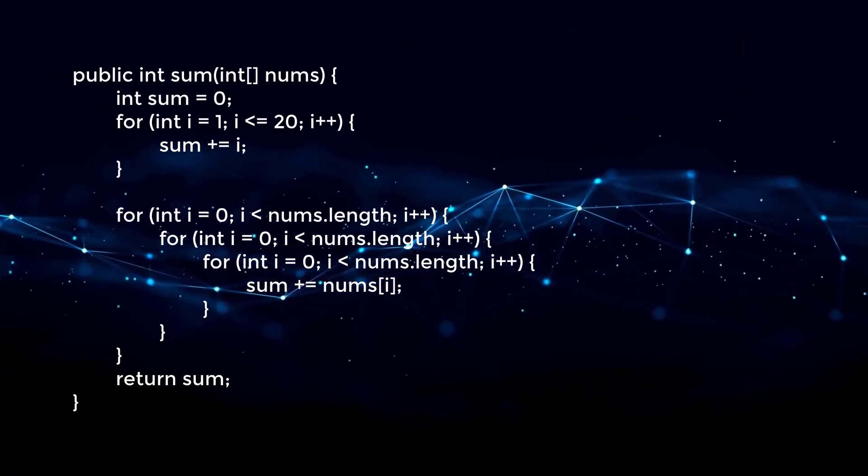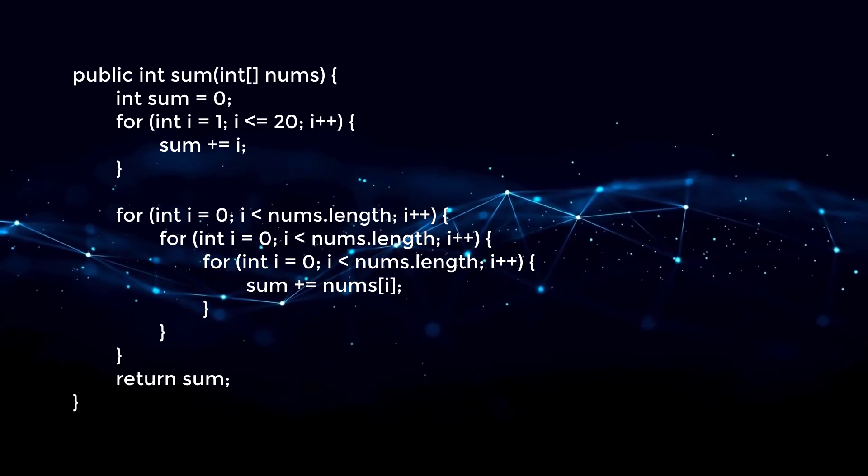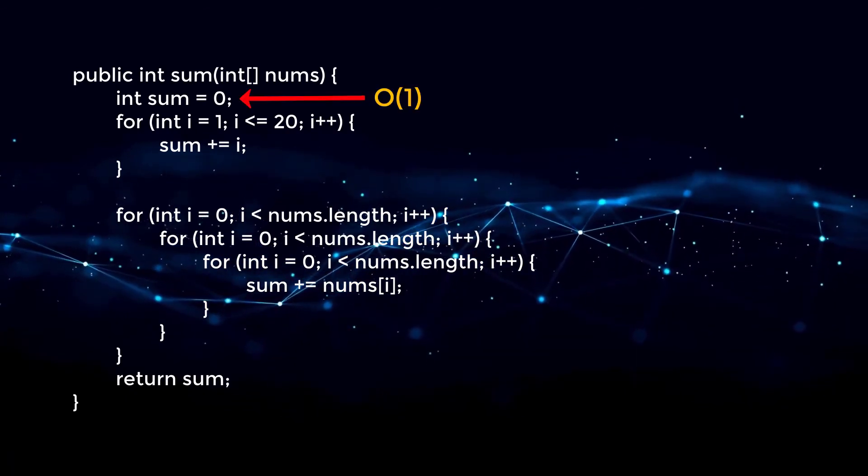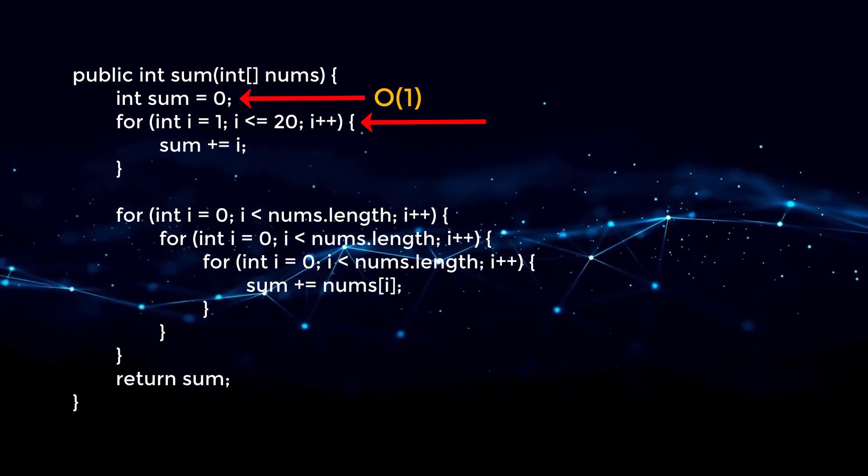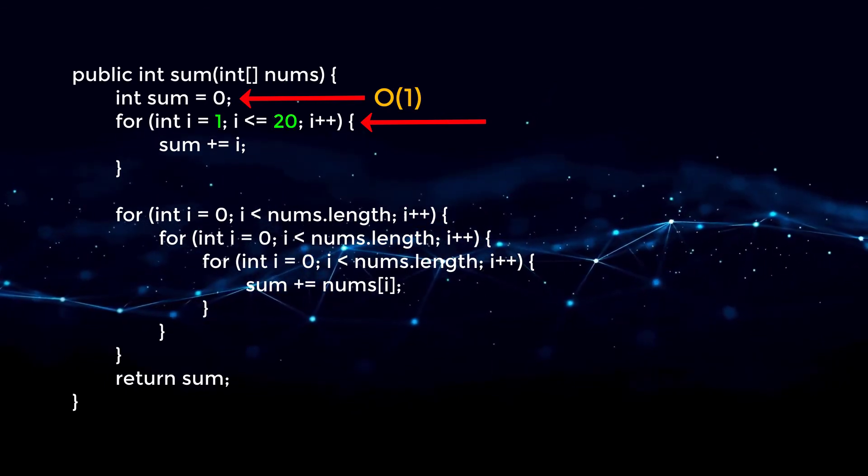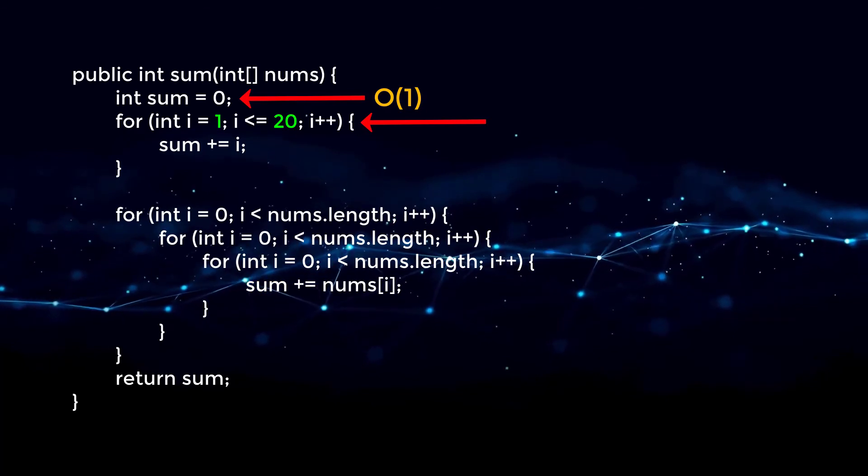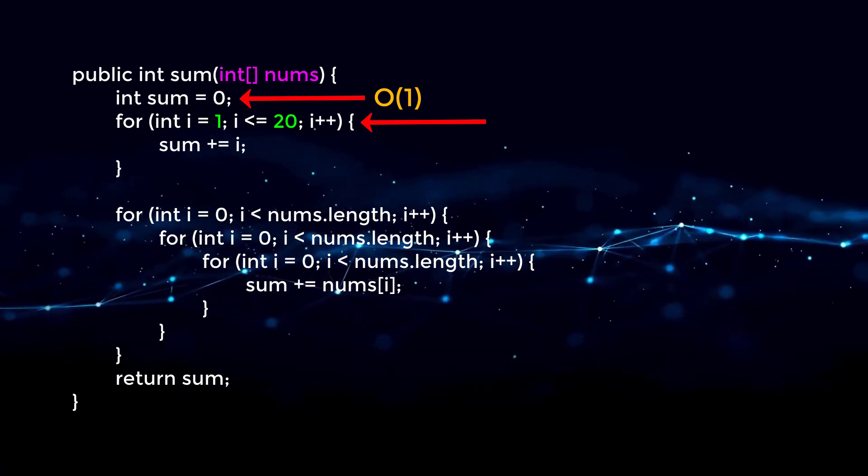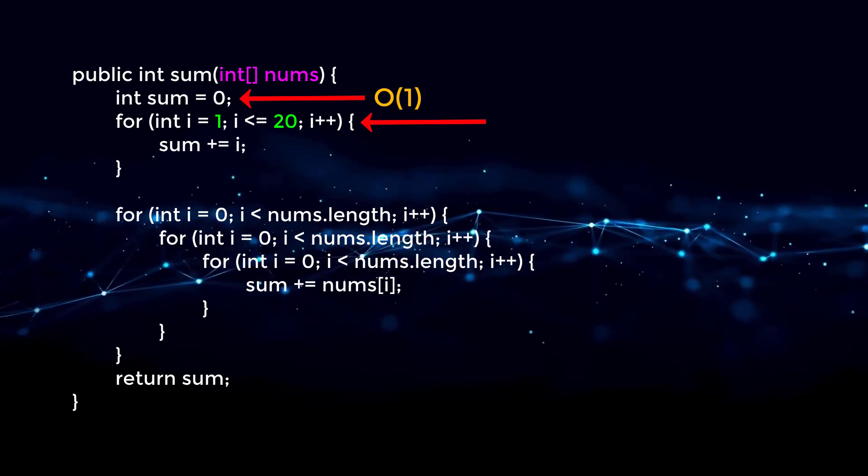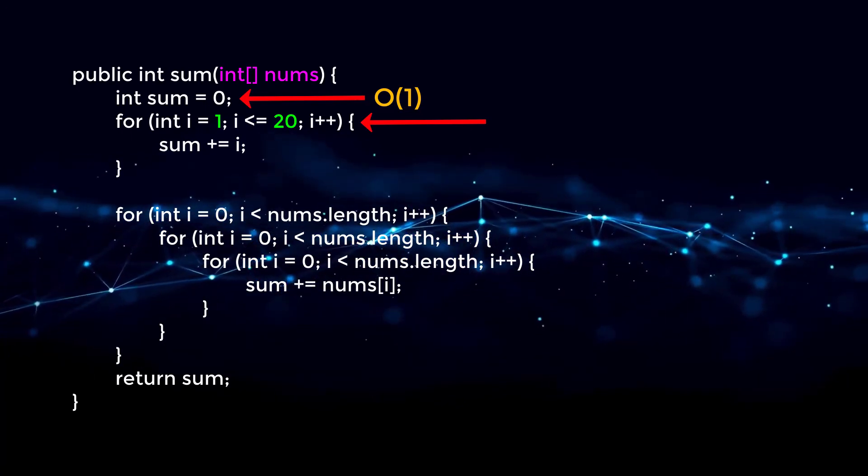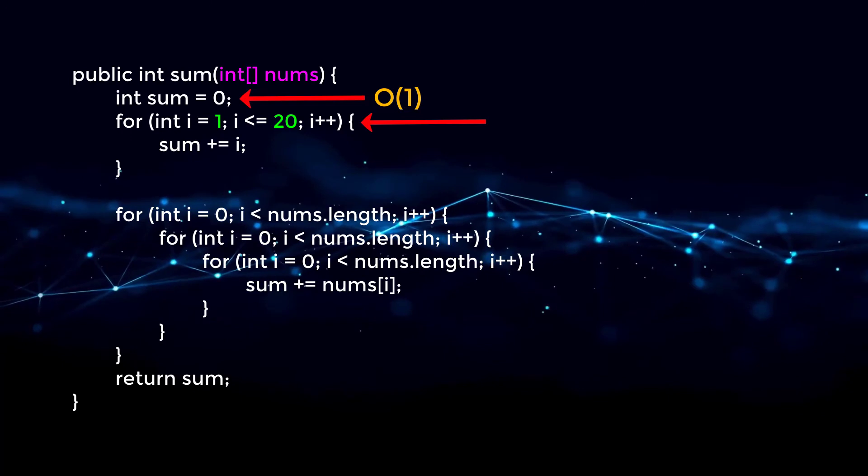So let's look at one more example, but this time it's going to be a bit more involved. We already know line one is running in constant time. Line two, however, it is always running from one to 20. What this means is that no matter if our nums array grows in size, we are always going to loop exactly 20 times. That means that it is unaffected by our input and we can call this line constant.